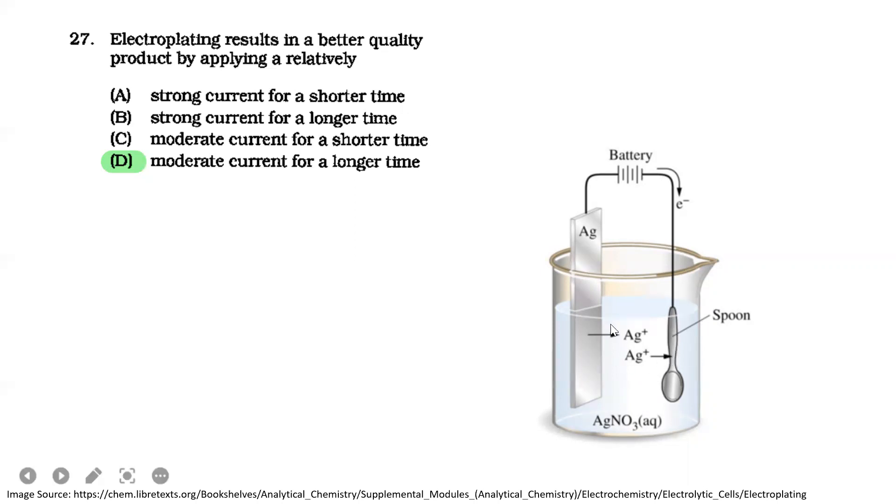Here, silver is used on a spoon. The silver erodes or dissolves and transfers to the spoon. In this case, think about what's more stable, what seems to work better. It's moderate current—not too much, not too strong—and for a longer time so there's time for the transfer.